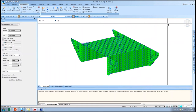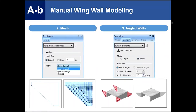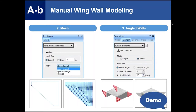That covers manual meshing using the Node and Element main menu. Now for wing walls not at right angles — the wizard creates wing walls perpendicular to the structure, but if they need to be skewed, you can use node and element functions. Actions like rotating or changing the physical shape of the bridge are all handled using the Node and Element menu.